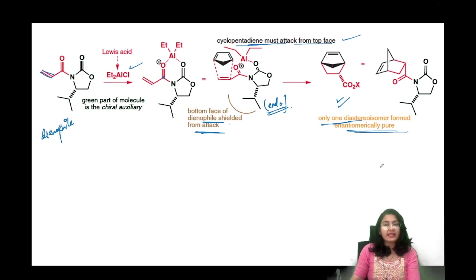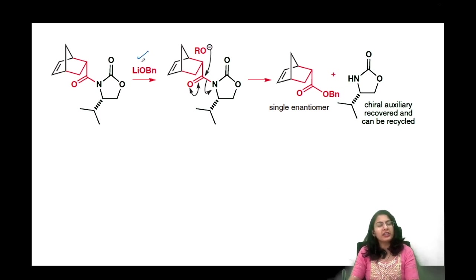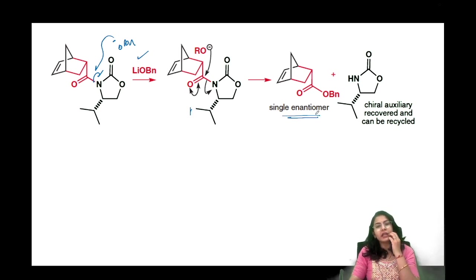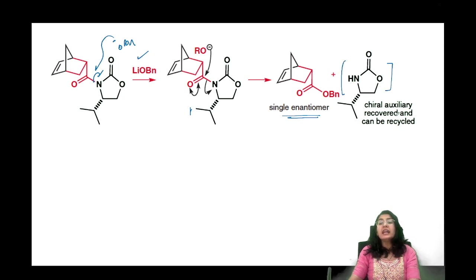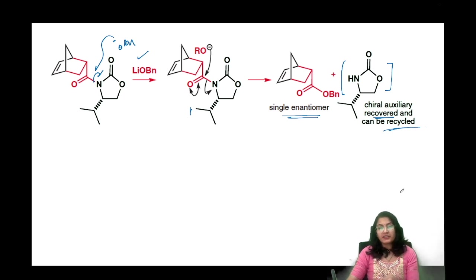So we have seen that the Diels-Alder reaction is diastereoselective — endo is greater than exo — but the endo had two possibilities. After inducing chirality via the chiral auxiliary, only one enantiomerically pure product forms. This amide-like bond is not a true amide because nitrogen has one more carbonyl, but it is still strong. To remove the auxiliary, we use LiOBn — OBn minus attacks — and it is eliminated easily, giving the single enantiomer product.